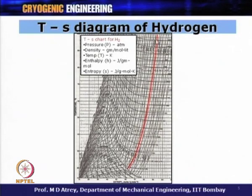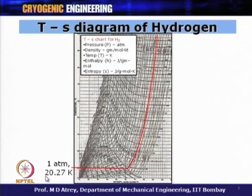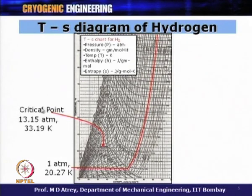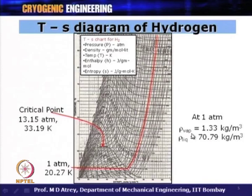At 1 bar on the T-S diagram, the temperature corresponding to the phase change from gas to liquid is the boiling point of hydrogen: 20.27 Kelvin at 1 atmosphere. The critical point has coordinates of 13.15 atmospheres and 33.19 Kelvin. The density of saturated vapor at 1 atmosphere is 1.33 kg/m³, while that of liquid hydrogen is 70.79 kg/m³.